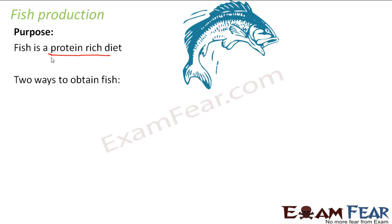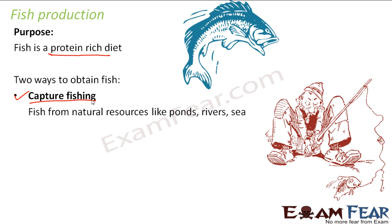There are two ways to obtain fish. The first one is capture fishing. Fishermen go with fishing nets and catch fish from ponds or rivers. Fish from natural resources like ponds, rivers, and sea are caught. You directly go to the natural resources where fishes occur and catch them. That is called capture fishing — obtaining fish directly from its natural place of occurrence.